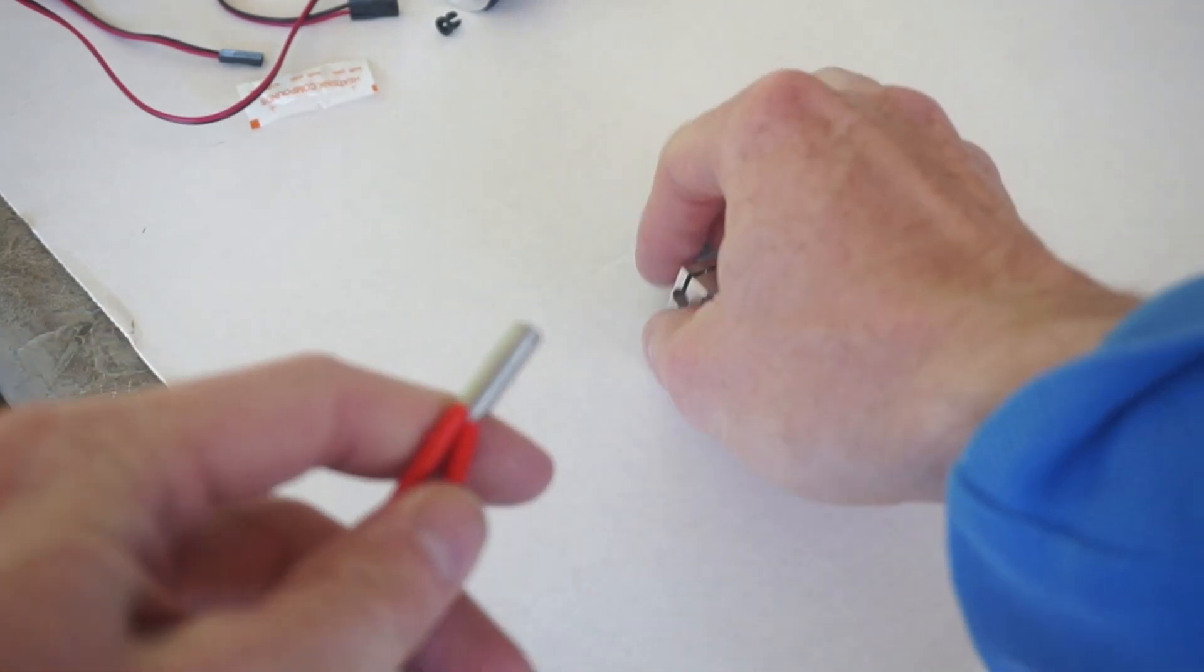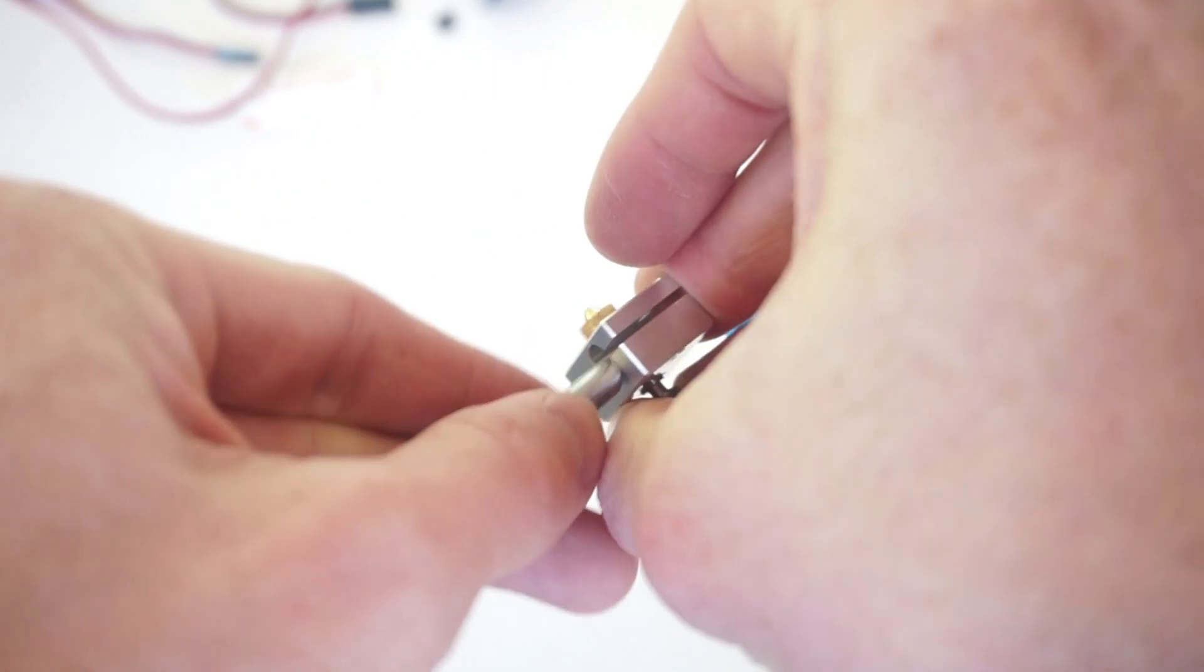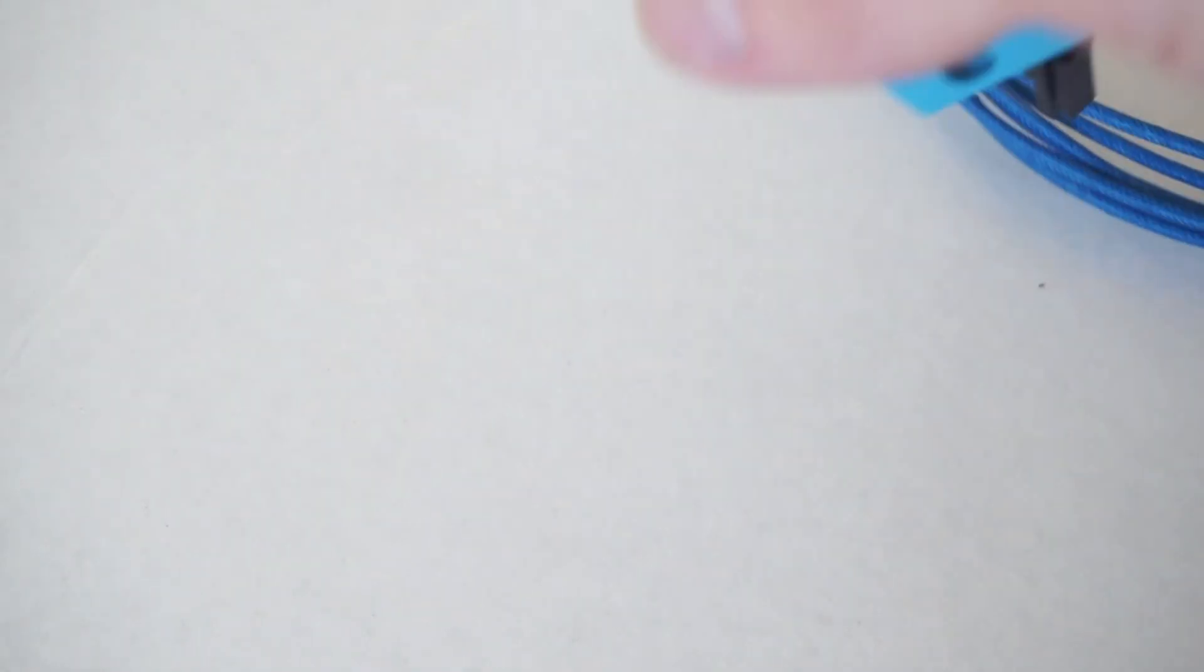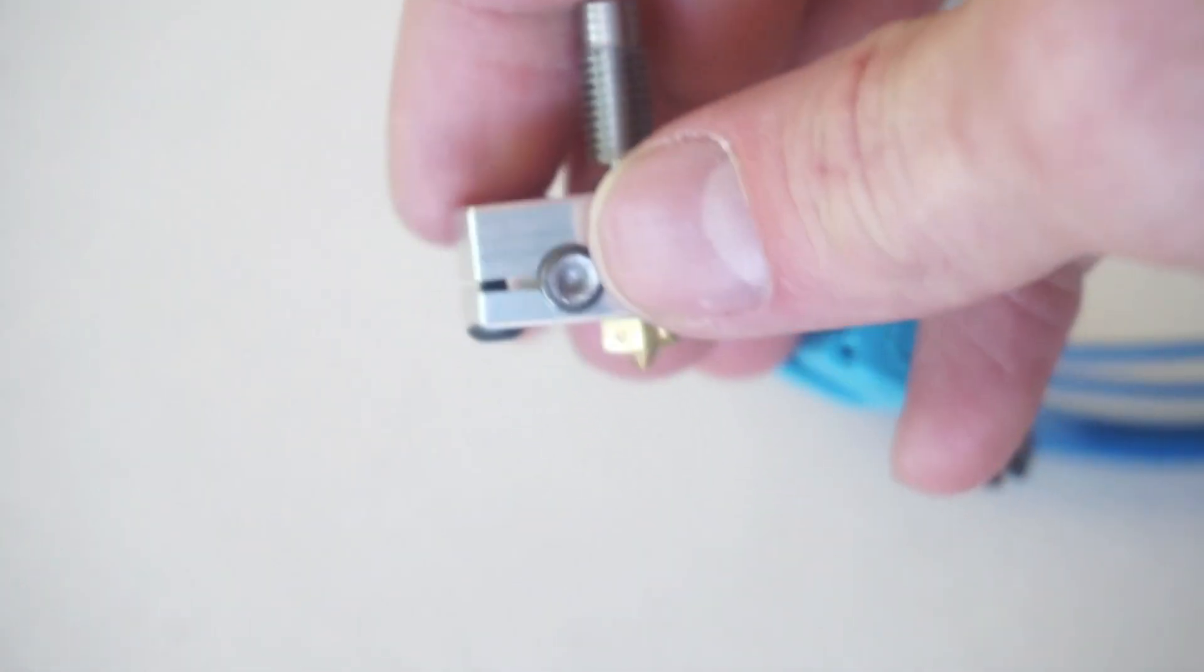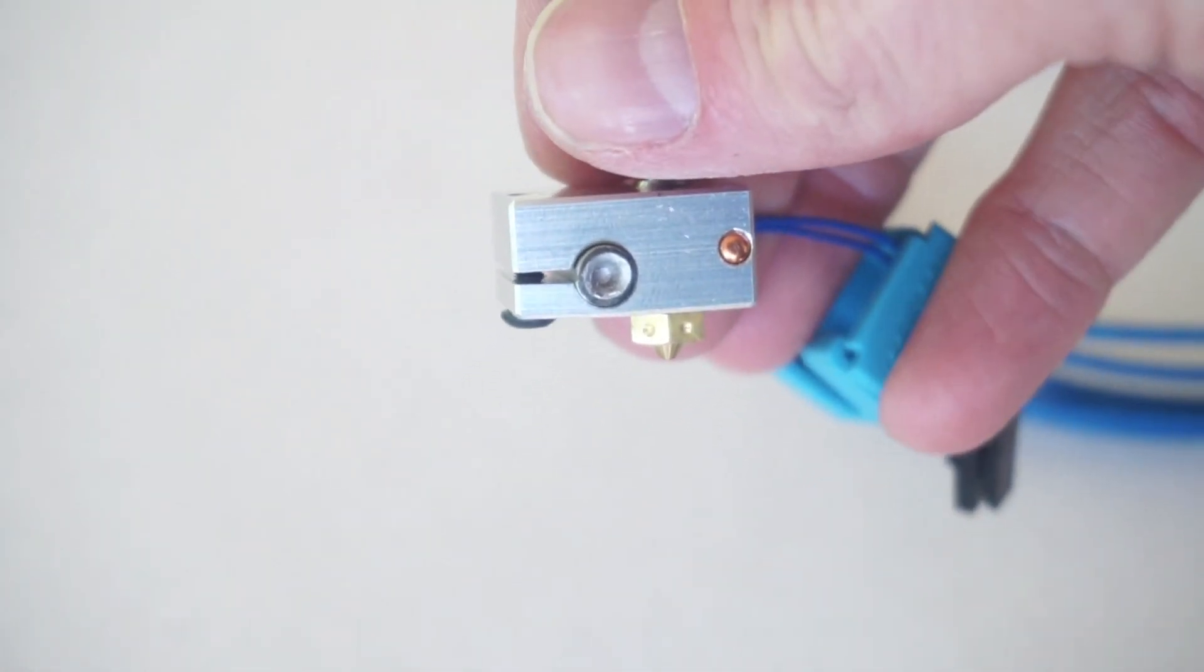So next we're going to get the heater cartridge, this piece, and attach it into here. Okay, so tighten this screw up right here so it gets pretty tight. It kind of looks like a deformation when you do it.